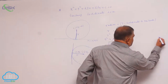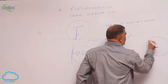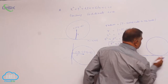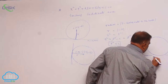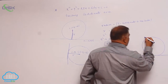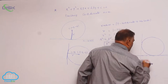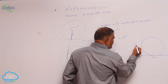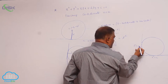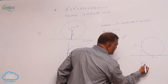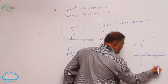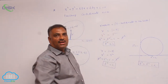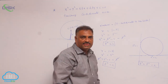Now, suppose the circle touches both coordinate axes. Then we have g² = c from touching the x-axis and f² = c from touching the y-axis. Together, the condition is g² = f² = c. This is the condition for the circle to touch both the x-axis and the y-axis.